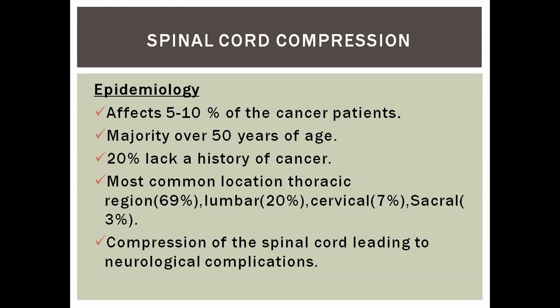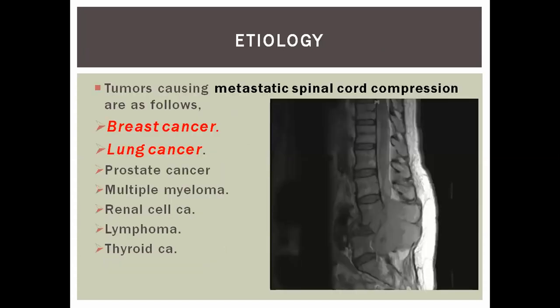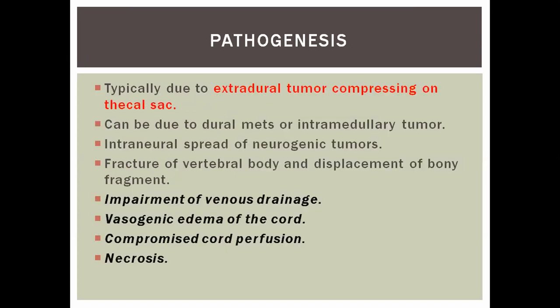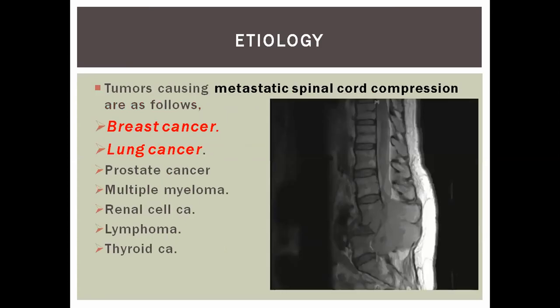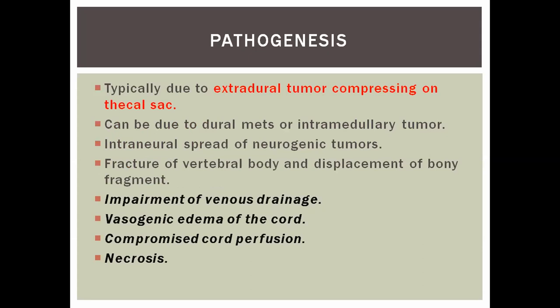Compression of the spinal cord is important because it leads to devastating neurological complications. The most common malignancies causing spinal cord compression are breast cancer, lung cancer, prostate cancer, and hematological malignancies like multiple myeloma, as well as malignancies causing hematogenous spread like thyroid carcinoma and renal carcinoma. It is mostly due to extra-dural tumor compressing the thecal sac, or it can be due to intramedullary tumor. Pathogenesis involves either direct neural involvement or bony involvement from metastatic disease, leading to retropulsion of vertebral fracture fragments pushing on the spinal cord.